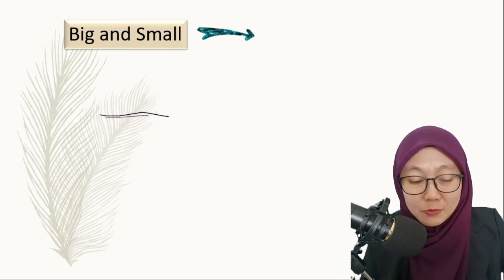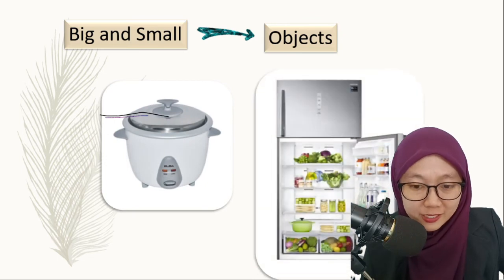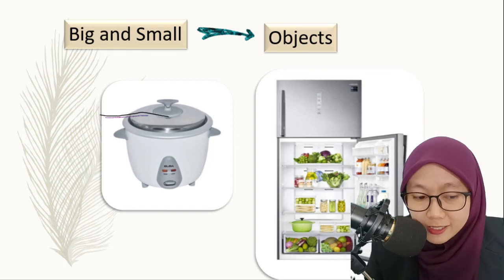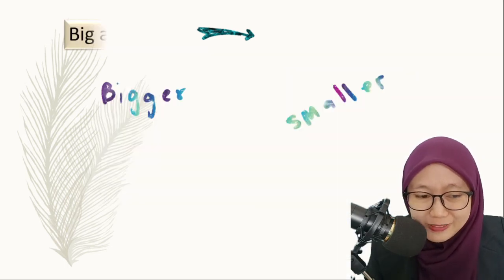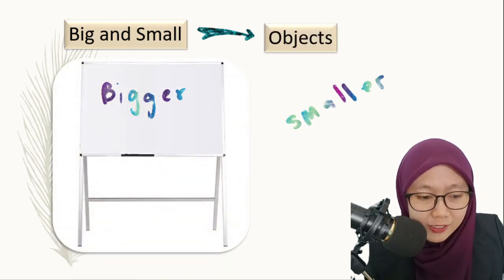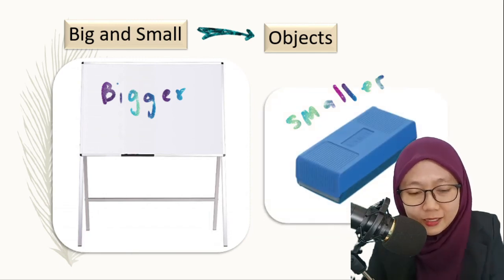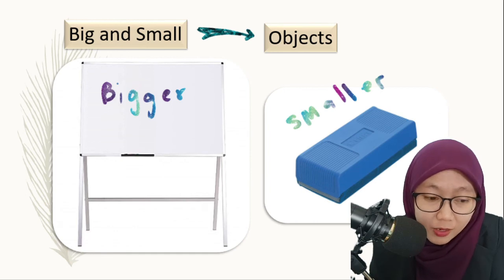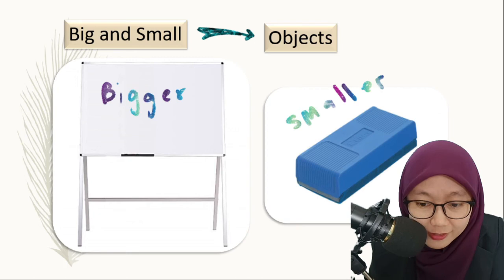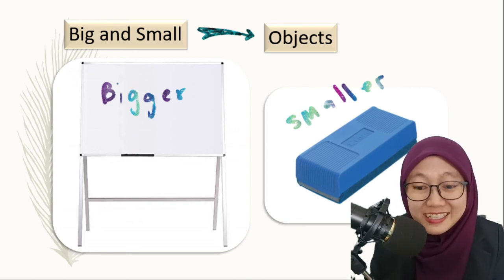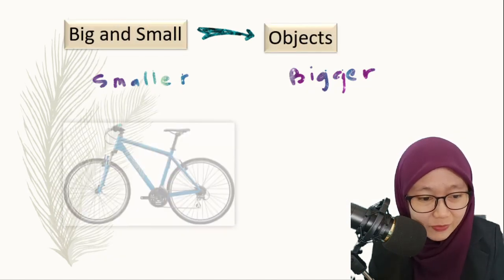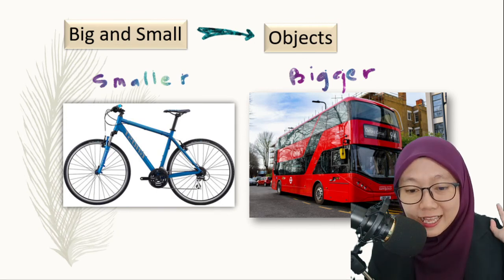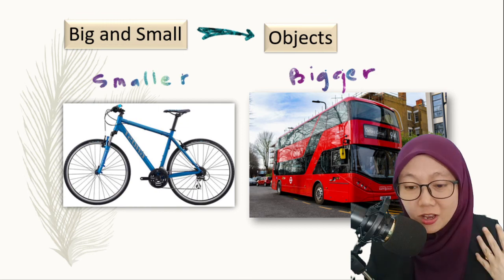Now we need to compare between small objects and big objects. That is a rice cooker and a refrigerator — can you compare which one is smaller and which one is bigger? The rice cooker is smaller than the refrigerator. We also have a whiteboard and a duster — the whiteboard is bigger than the eraser. And we have a bicycle and a bus — the bicycle is smaller than the bus. So all of these are non-living things; they are objects.